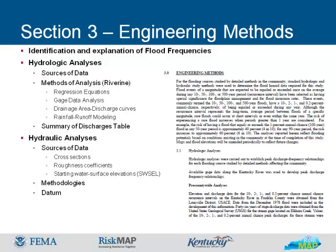Hydraulic analyses are studies that determine the water surface elevations on streams. Flood insurance studies are primarily concerned with the 1% annual chance, or 100-year elevations, also known as base flood elevations, or BFEs. However, the 10%, 2%, and 0.2% recurrence intervals are also often determined. Typical information used in hydraulic analyses may include cross sections, roughness coefficients, and starting water surface elevations. Methodologies used to compute the flood elevations and the various components used in calculations are described. The most common methodology used to calculate flood elevations is a stepped backwater computer program such as HEC-RAS. For complex flooding situations, a computer program that models two-dimensional flow may be used. This section also indicates the vertical datum to which all elevations are referenced.